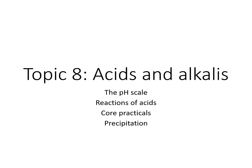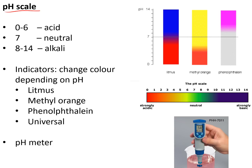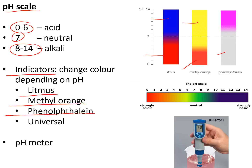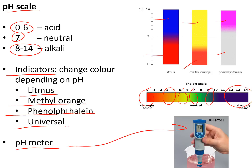Topic 8 is about acids and alkalis. The pH scale tells us whether something is acid or alkali: 0 to 6 is acid, 7 is neutral, and 8 to 14 is alkali. We can tell whether something is acid or alkali using indicators — for example, litmus, which is red in acid and blue in alkali; methyl orange, which is orange-red in acid and yellow in alkali; and phenolphthalein, which is colourless in acid and bright pink in alkali. Universal indicator has a range from red for strong acid to purple for strong alkali. We can measure pH more accurately using a pH meter, which gives a digital readout to one or two decimal places.